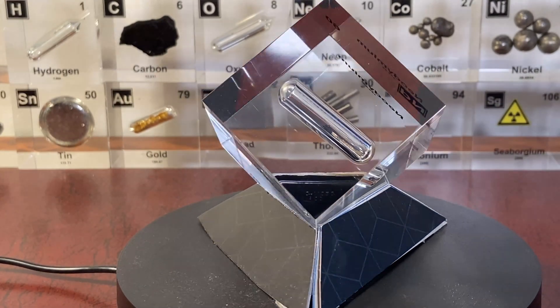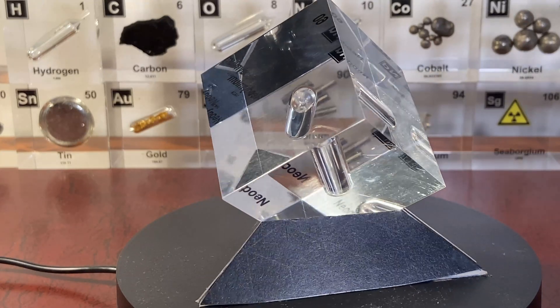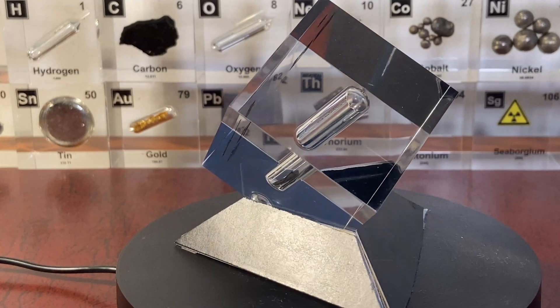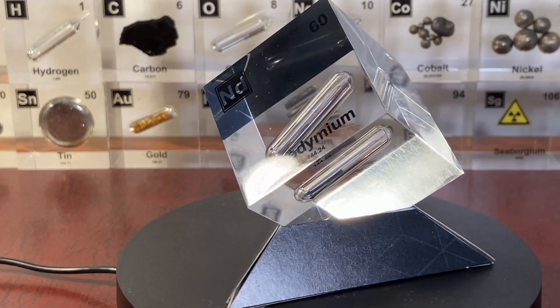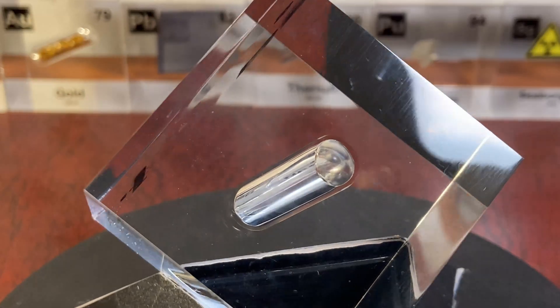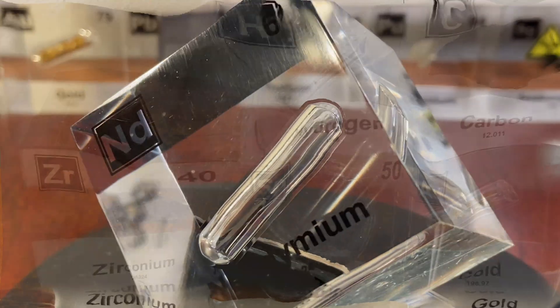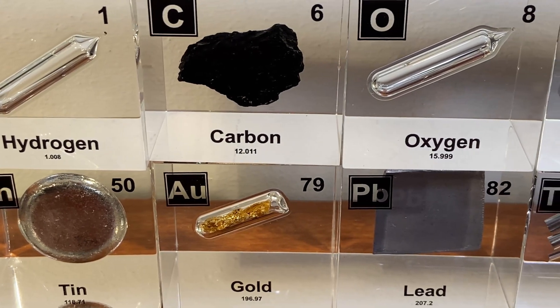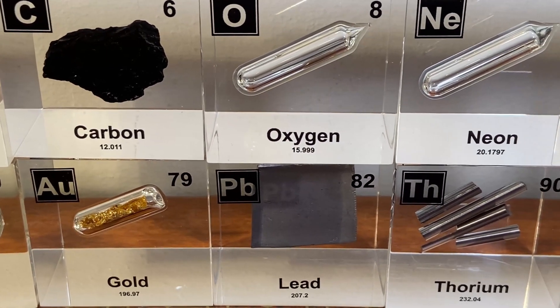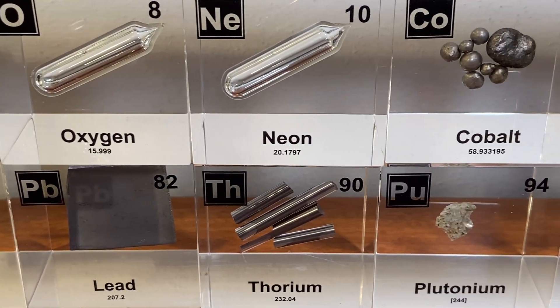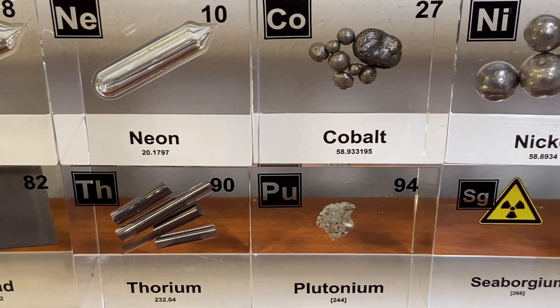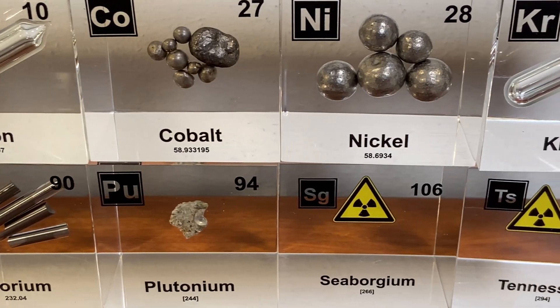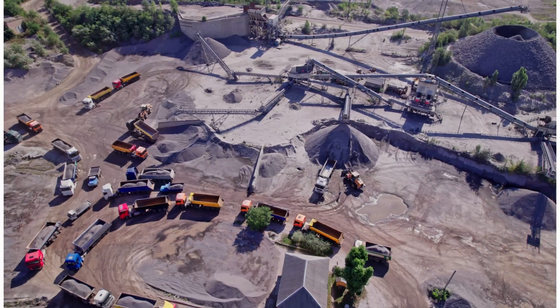Once Welsbach had separated the two elements, he confirmed his discovery by analyzing their properties. He compared the spectra and other chemical behaviors, establishing that he had indeed isolated two distinct elements. This work was painstaking and required precision, as even small impurities could have confounded the results. Welsbach's identification of neodymium and praseodymium was confirmed by the unique spectral lines and the distinct colors of their salts. Neodymium salts tend to have a reddish purple color, while praseodymium salts appear green. Welsbach published his findings, which were met with great interest in the scientific community. His work not only added two elements to the periodic table, but also demonstrated the need to carefully reexamine other supposed single elements, especially among rare earths. His discovery was a catalyst for further research in rare earth chemistry and opened up new possibilities for technological applications as the unique properties of neodymium and praseodymium became better understood.